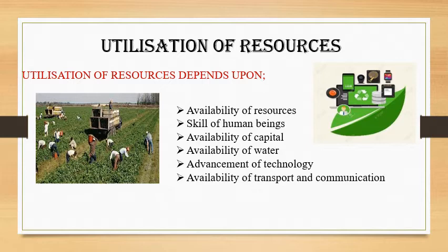Resources become usable when they are processed. For example, cotton is converted into yarn. On further processing it is converted into fabric, and then finally into garments. That means, at various stages, value addition is possible by applying skill and technology.